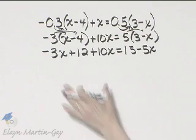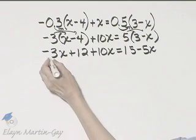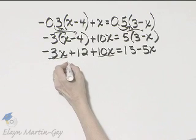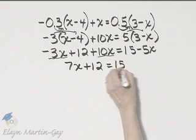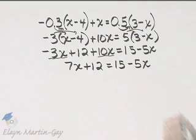Do I have any like terms? Yes, I do on the left side. Negative 3x plus 10x, that is 7x plus 12 is equal to 15 minus 5x.